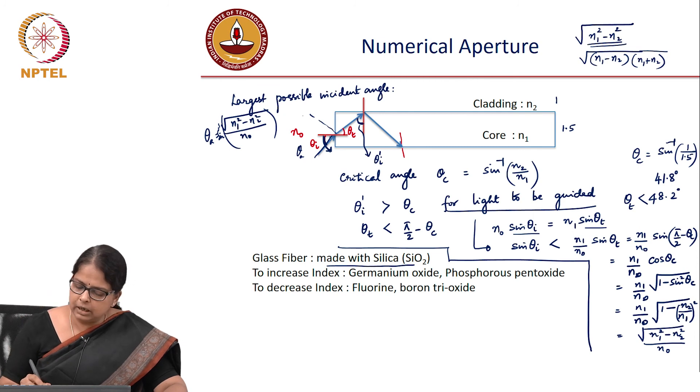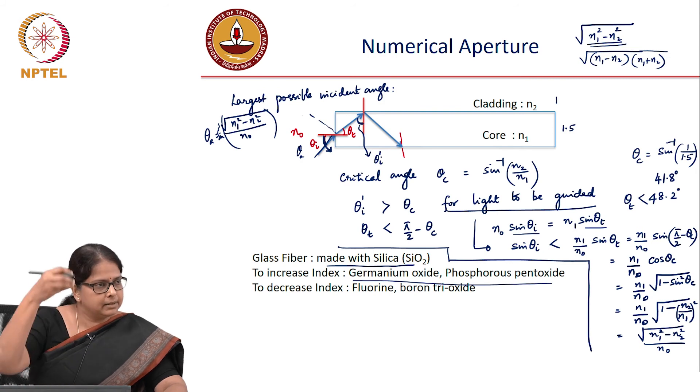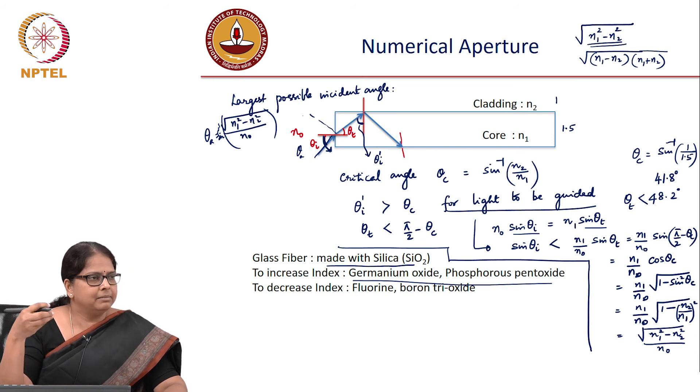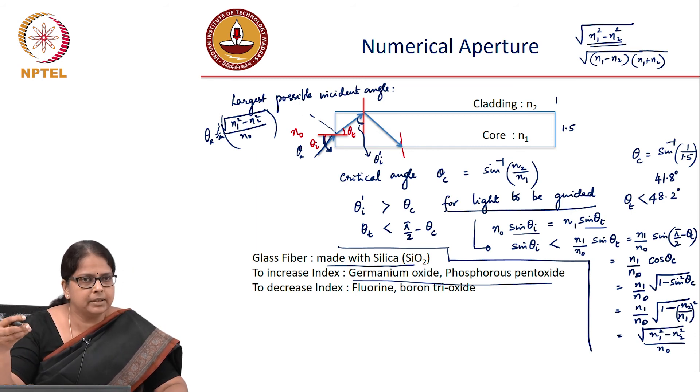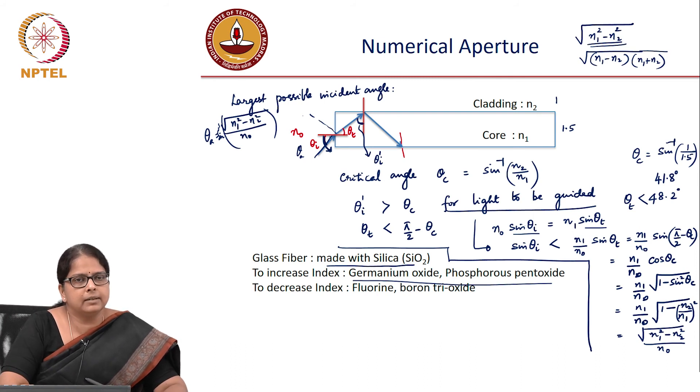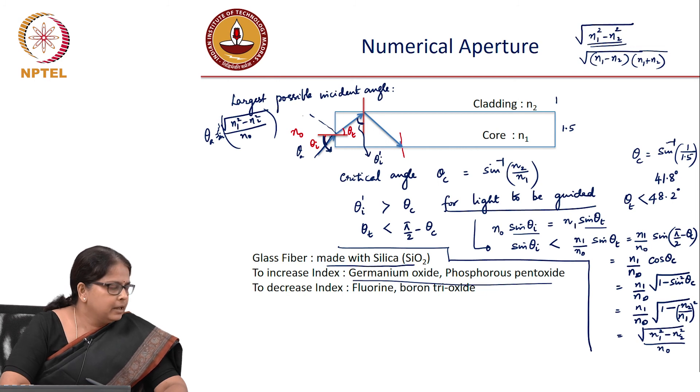In the core region, to increase the refractive index, dopants are added. These are additional materials added by certain weight percent or mole percent. A very small dopant is added so that the refractive index of doped silica is effectively higher.